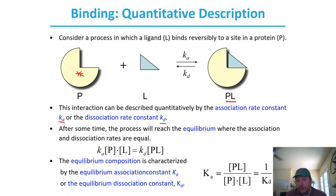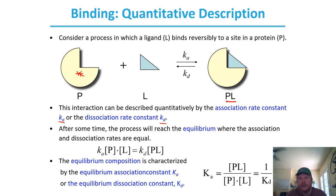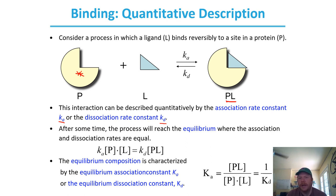The equilibrium association constant K sub A equals our product — the protein-ligand complex concentration — divided by our reactants: protein concentration times ligand concentration. K sub A is equal to one over K sub D.